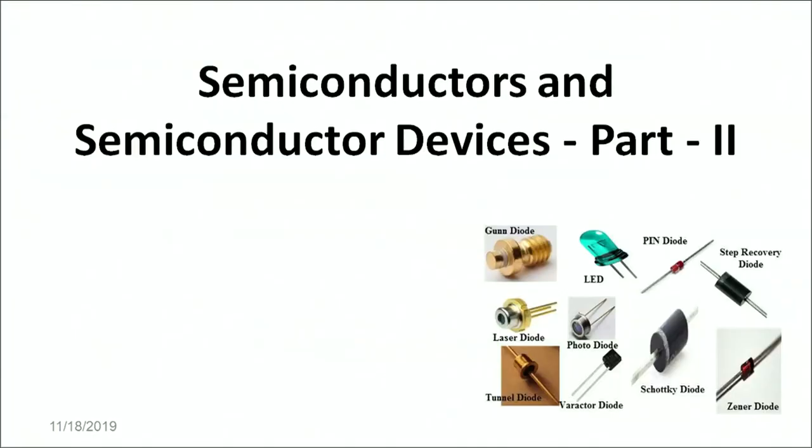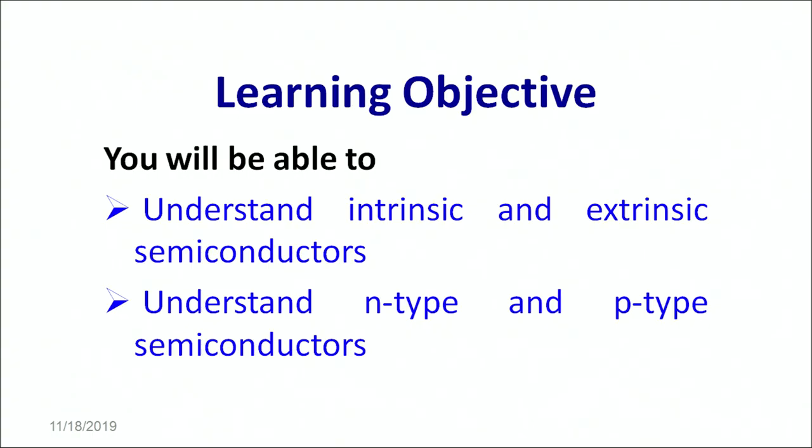Welcome learners. I'm here at NIOS studio and we are going to continue with semiconductor devices part 2. In this particular part you will be able to understand what are intrinsic and extrinsic semiconductors, and you will be able to make out what are the two kinds of extrinsic semiconductors, that is n-type and p-type semiconductors.